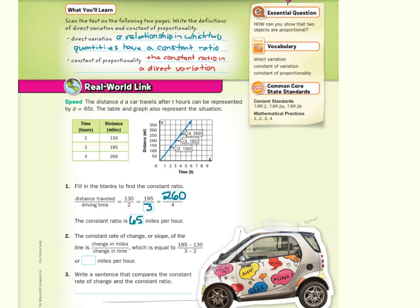The constant rate of change or slope of the line is change in miles over change in time, which is equal to 195 minus 130. Well, that's 195 minus 130, over 3 minus 2, which is also equal to, if you simplify this out, 65 over 1, which is 65 miles per hour. Write a sentence that compares the constant rate of change and the constant ratio. Well, not to make this too difficult, but they are the same. 65 equals 65.